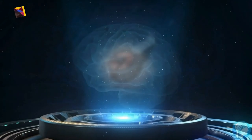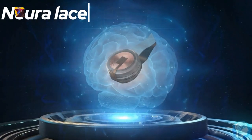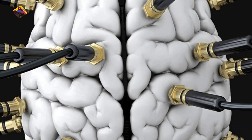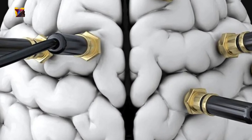Neuralink's core product is a small device called a neural lace. This device includes a series of thin, flexible electrodes that are inserted into the brain.